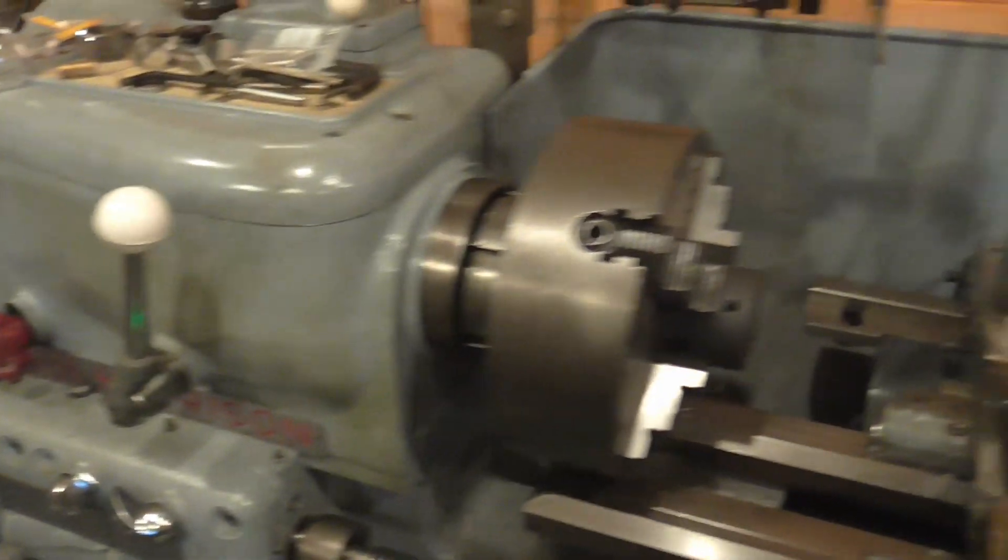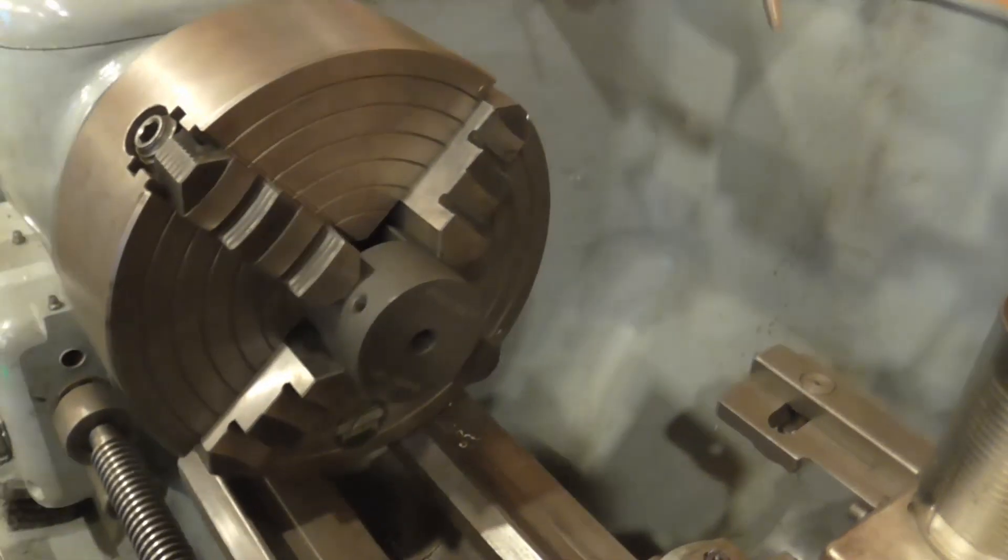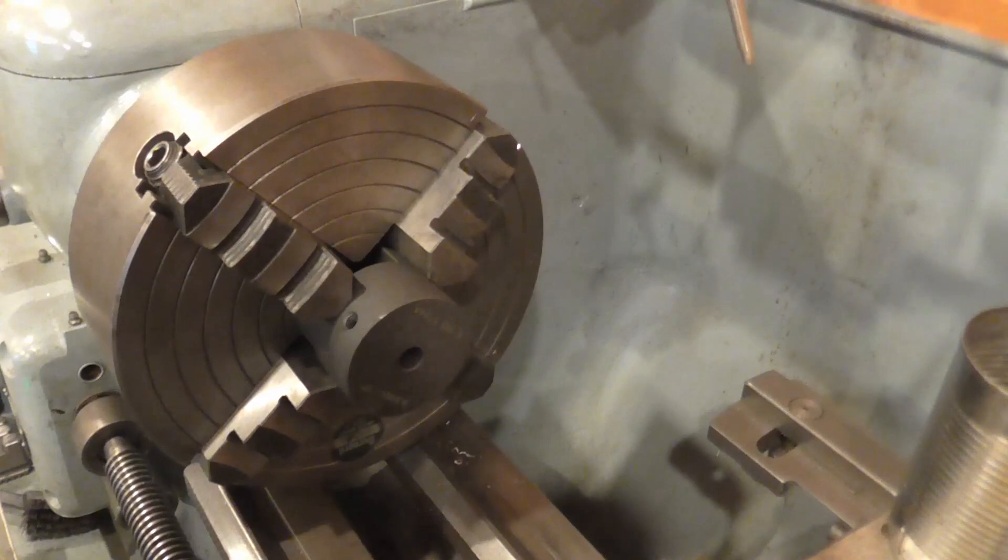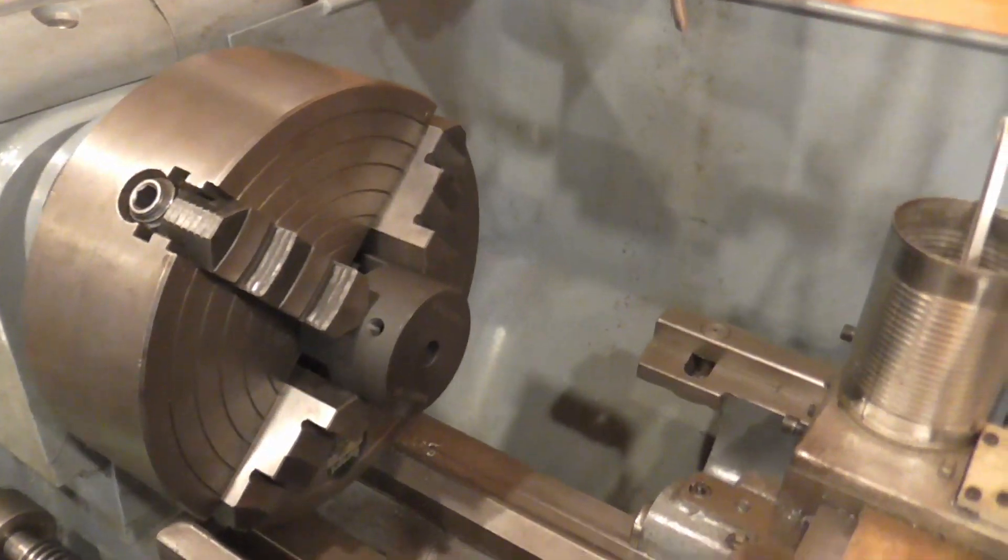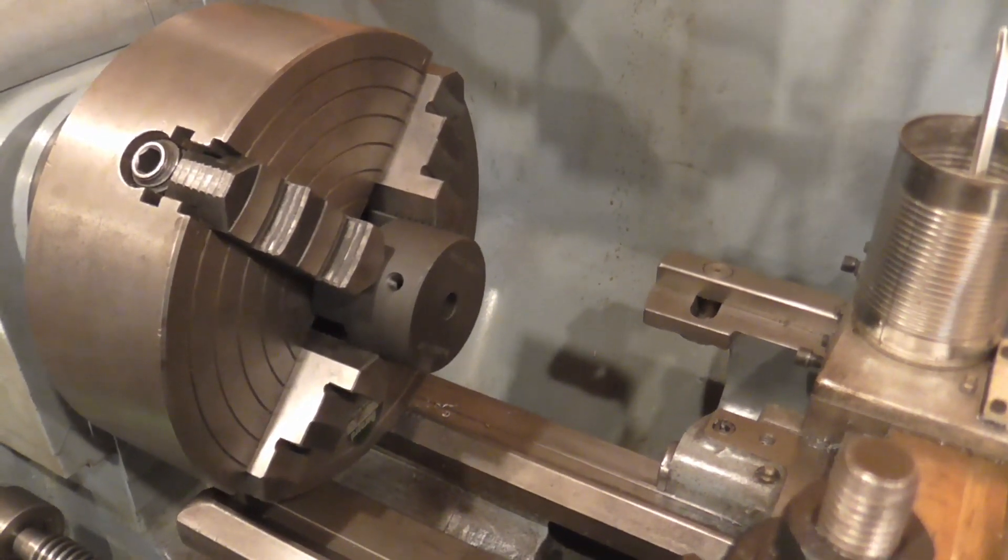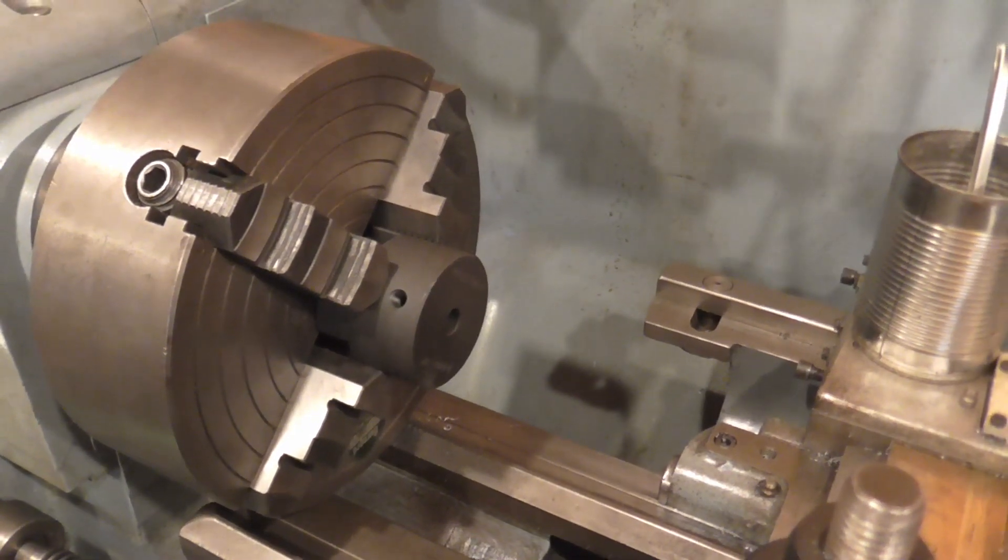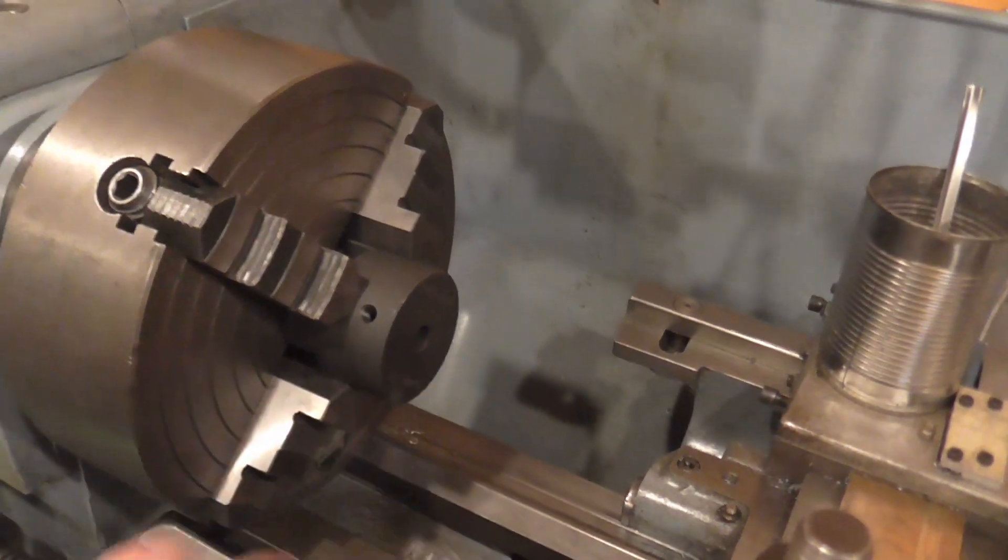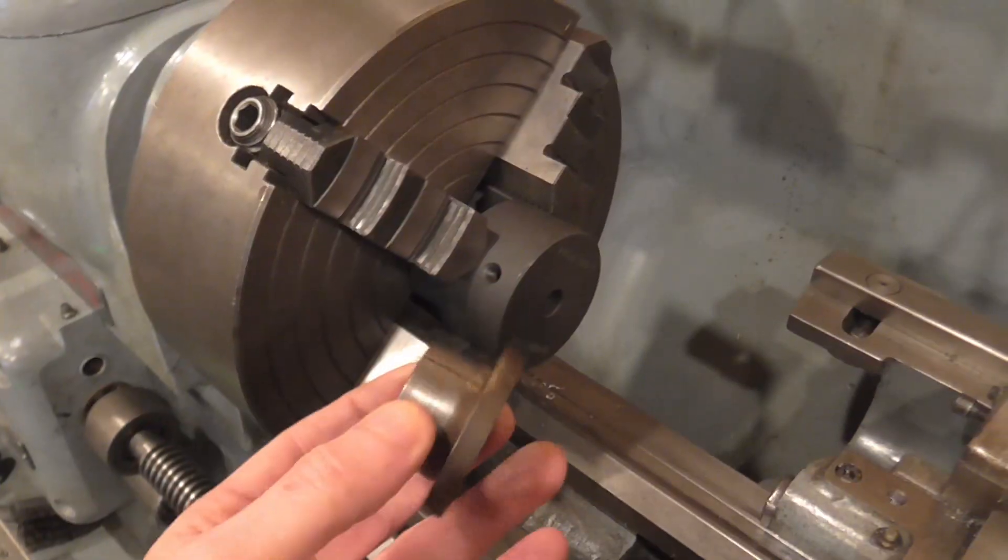And I've got the L100 sized, in this case Dunlop branded hub, mounted in the four jaw and set up to run true. And I want to machine into this that three-quarter inch per taper. But I need to put a counter bore in the back of this for the bush.